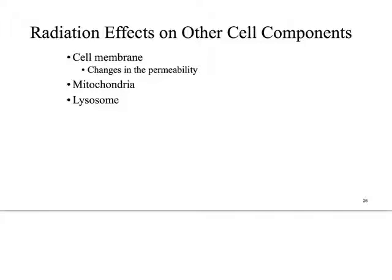Radiation damage can also occur to other parts of the cell beyond DNA. It could affect the cell membrane such that the protoplasm runs out. It could affect the mitochondria, destroying the cell's ability to produce energy. Or it could rupture a lysosome — sometimes called 'suicide bags' by biologists — spilling out acidic content that will destroy the cell. These are radiation effects on other cell components.